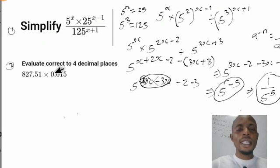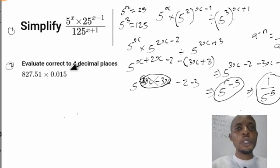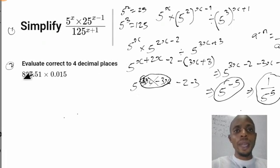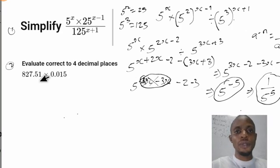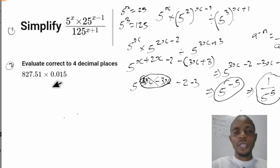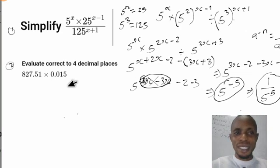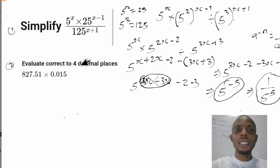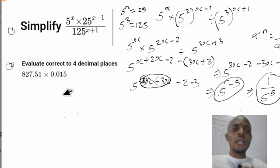Now let's start question two. The question says: evaluate 827.51 multiplied by 0.015. This is a decimal multiplication problem. Some of you may find it difficult to handle the decimal place, so let's dive into it.